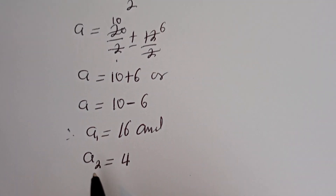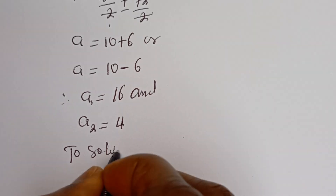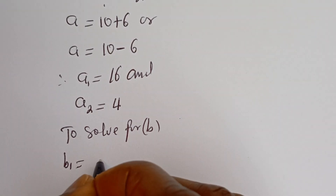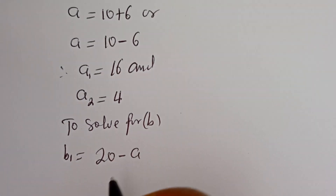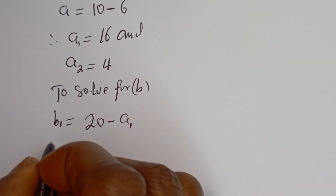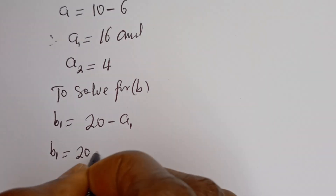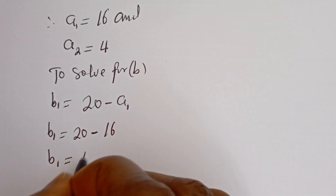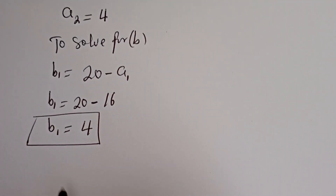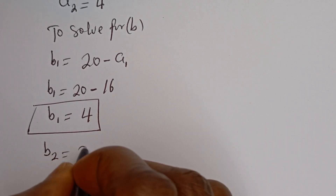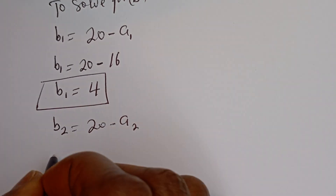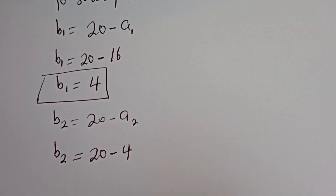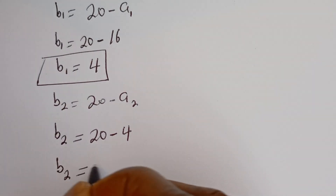Now let's solve for b1 and b2. From equation 3, b is equal to 20 minus a. So b1 is equal to 20 minus a1, which is 20 minus 16, giving b1 equal to 4. Also, b2 is equal to 20 minus a2, which is 20 minus 4, giving b2 equal to 16.